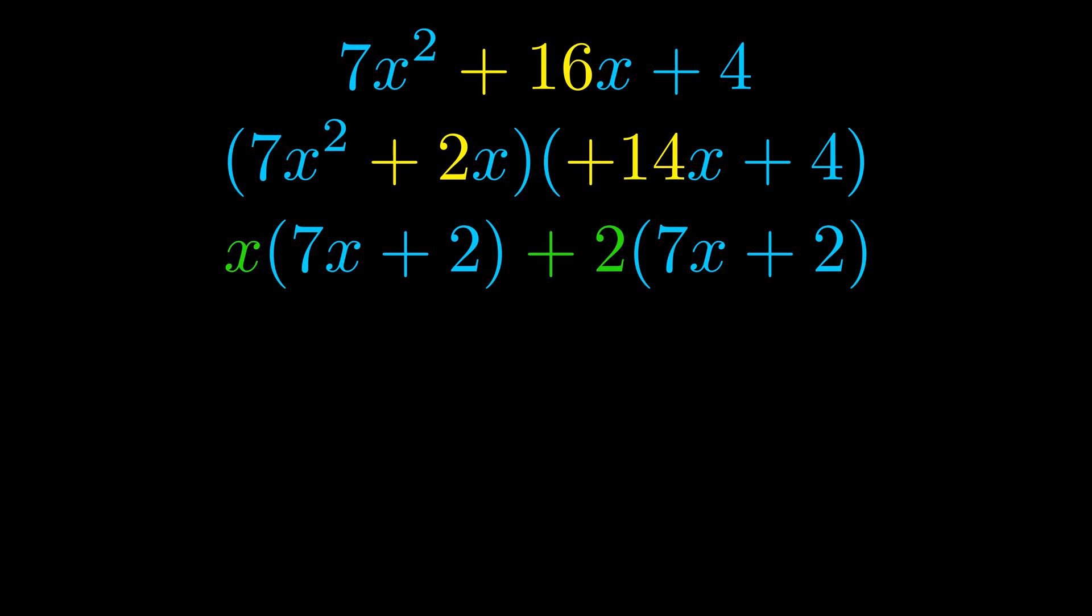Notice also how what remains inside the parentheses is the same in both cases. The blue values are the same. Those blue values will become one of our factors, and we will combine the two green values—the GCFs that we pulled out—to get the other one. And that is our fully factored equation.